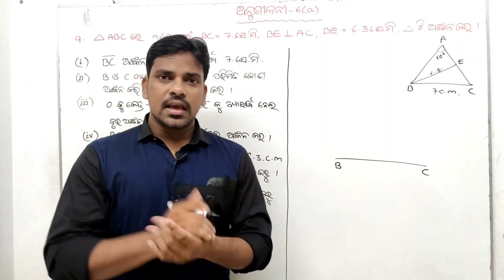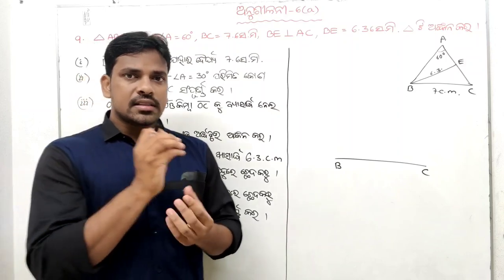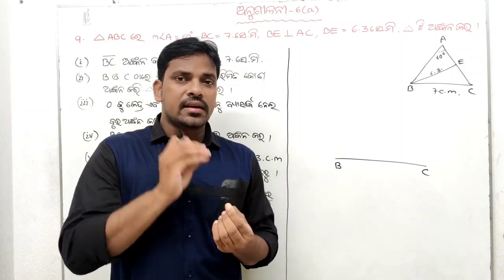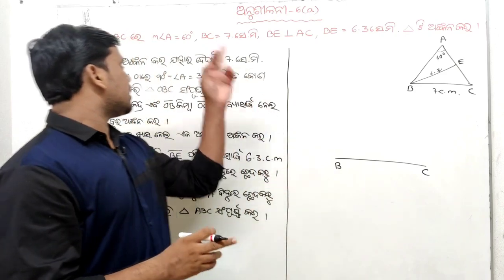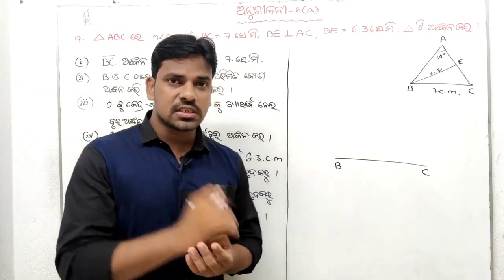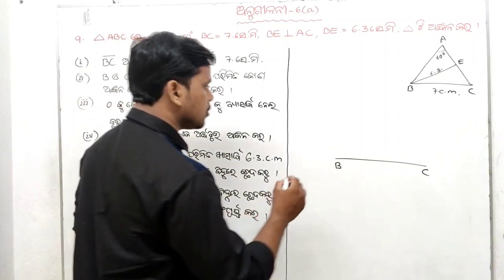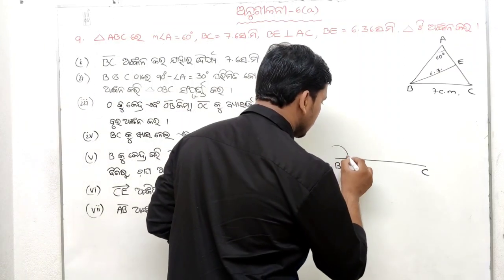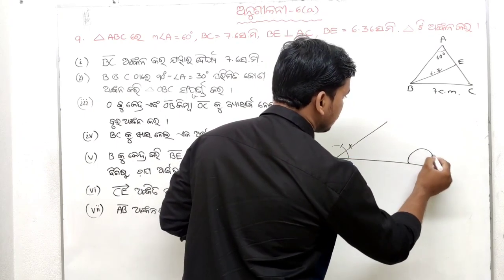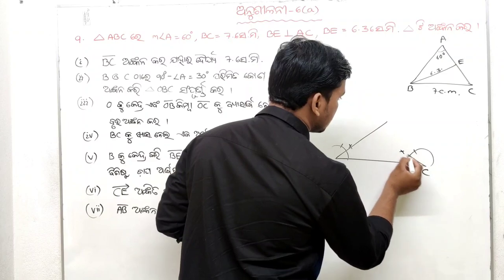Angle A is 60 degrees. 60 means B is going on 90 minus theta. So 90 minus 60 means 30 degrees. B is going on 30 degrees. C is also going on 30 degrees from 60.